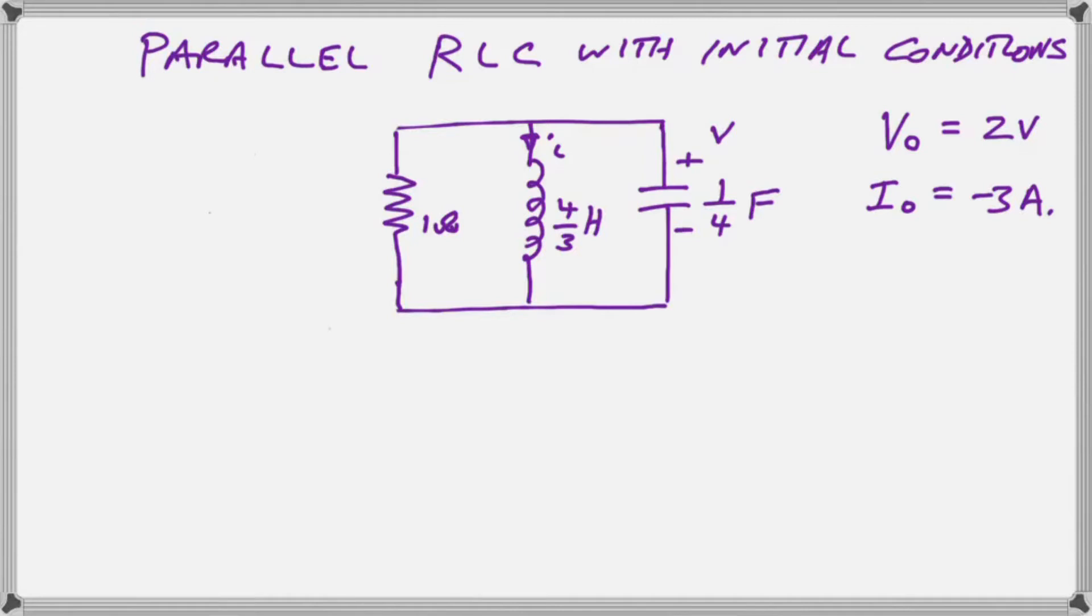So the first thing we are going to do in solving this, we say that at t equals zero the voltage is so much, the current is so much and the circuit is discharging towards dead. So, we first write a KCL equation at the top node.